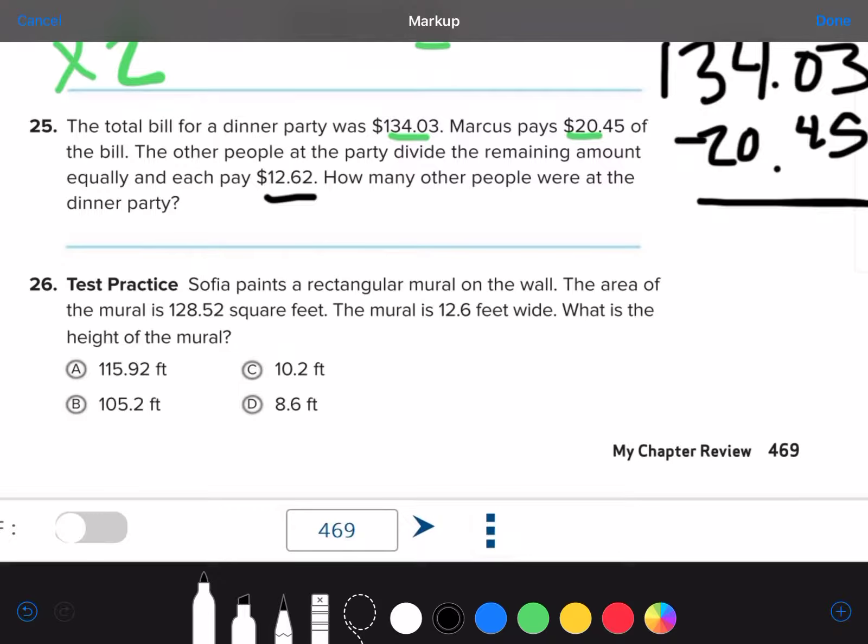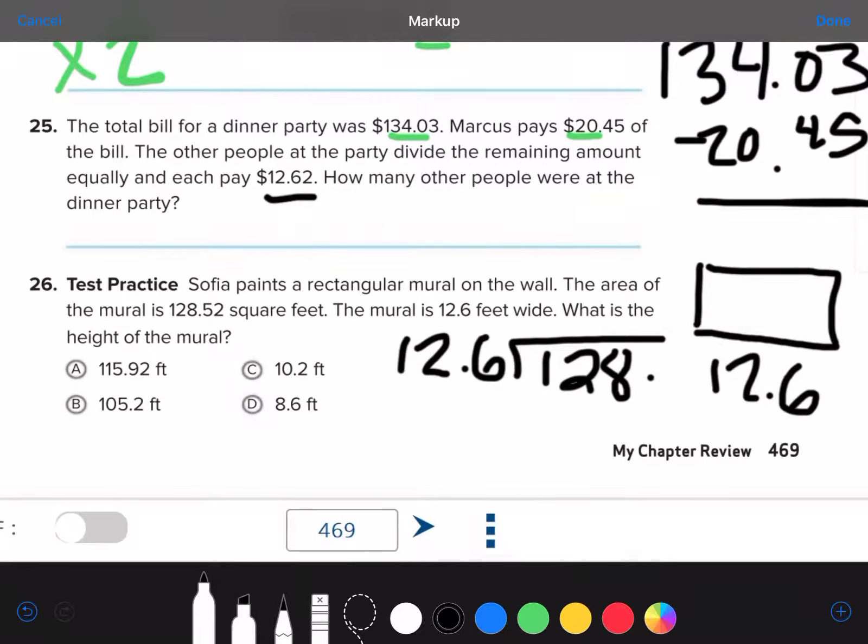Number 26. Sophia paints a rectangular mural on the wall. The area of the mural is 128.52 square feet. The mural is 12.6 feet wide. What is the height of the mural? So, the mural is rectangular. And, we know that it is 12.6 feet wide. What is the height of the mural? So, what you're going to do is you're going to take 12.6 and you're going to divide it into 128.52. And, what they see here is they want you to see that you need to move this decimal point over one spot and this decimal point over one spot. And, that will be a lot easier to figure out.